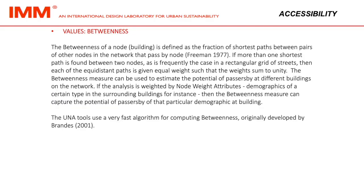Betweenness: the betweenness of a node or building is defined as the fraction of shortest paths between pairs of other nodes in the network that pass by that node (Freeman, 1977). If more than one shortest path is found between two nodes, as is frequently the case in a rectangular grid of streets, then each of the equidistant paths is given equal weight such that the weight sums to unity. The betweenness measure can estimate the potential of passerby at different buildings. If the analysis is weighted by node weight attributes such as demographics, the betweenness measure can capture the potential of passerby of that particular demographic at a building. The UNA tools use a very fast algorithm for computing betweenness.